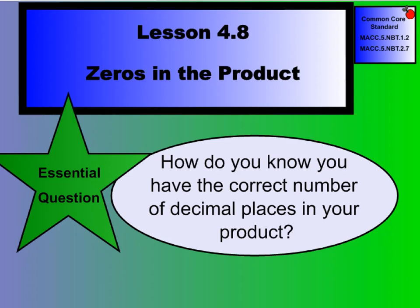Hi there, boys and girls. Welcome to Lesson 4.8, Zeros in the Product. This is actually our last lesson for Chapter 4. Our essential question is, how do you know you have the correct number of decimal places in your product? We're going to work through some practice problems together, and tomorrow in class we'll practice some more. Please turn in your GoMath book to Lesson 4.8, and let's begin.